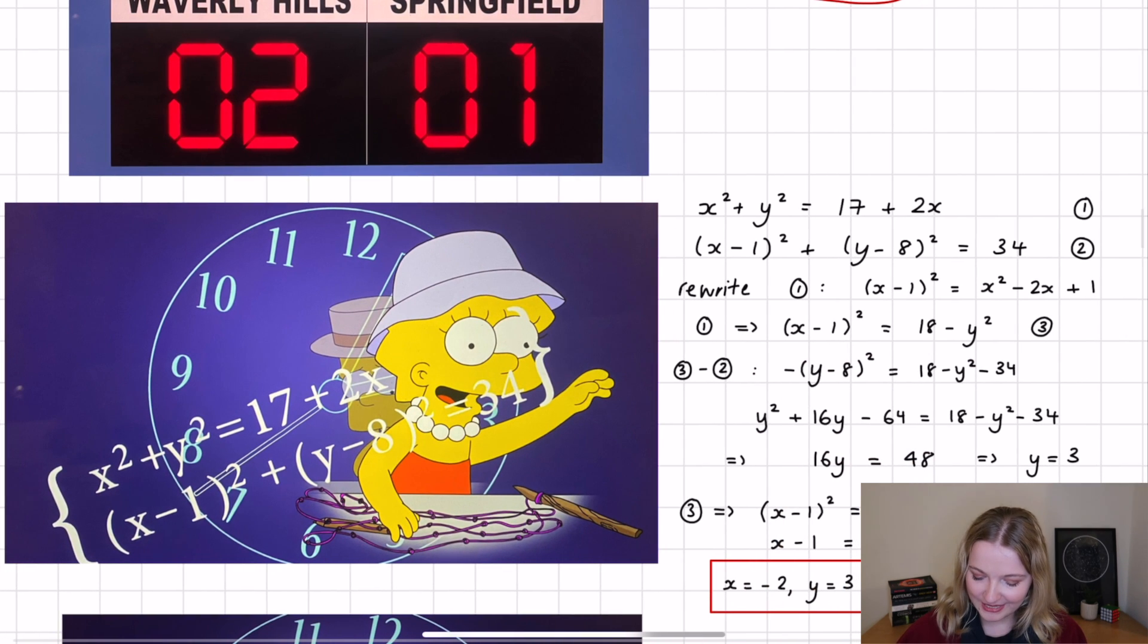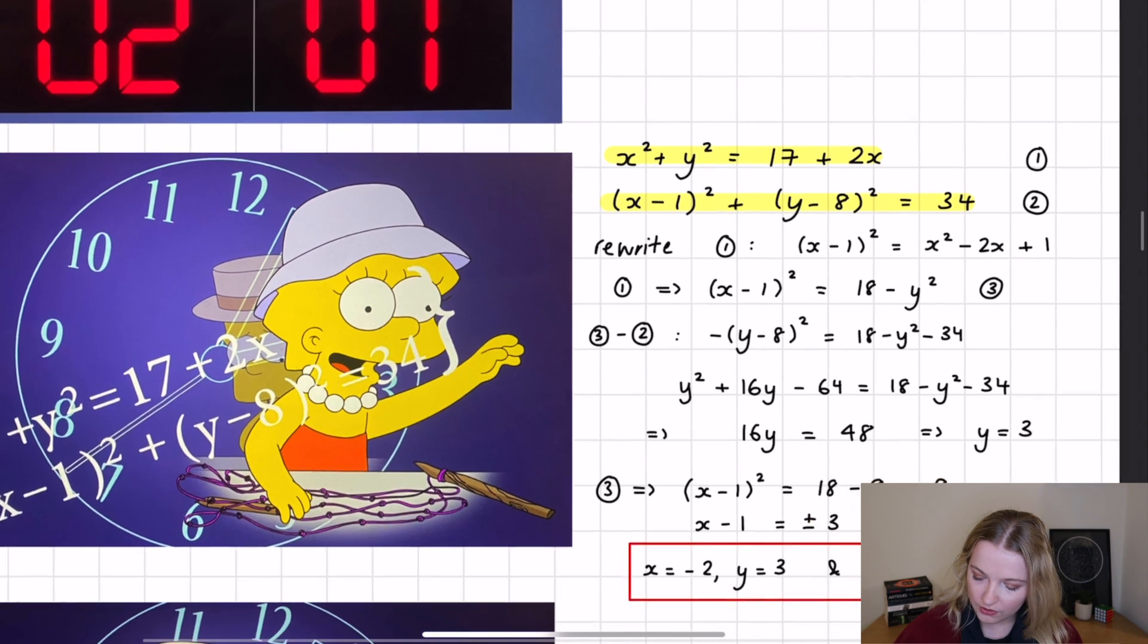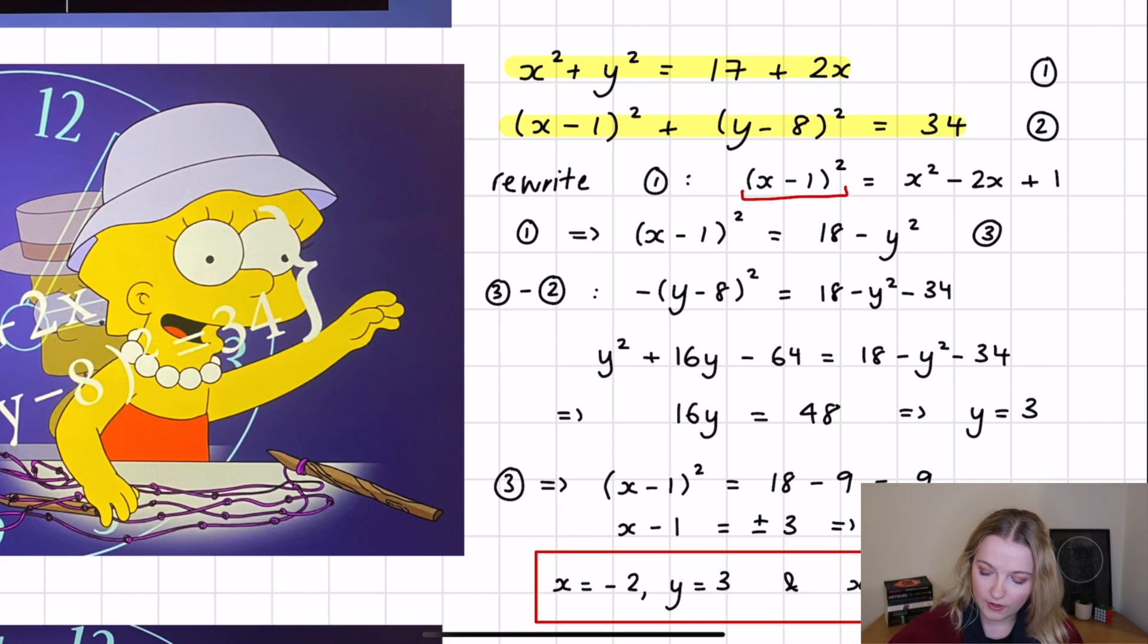The next question was this question here. And I like this because it was simultaneous equations. Again, I'm just going to highlight the steps that I've taken here. But essentially, we had these two simultaneous equations here. So we have this one and this one, which are one and two. And I did a little trick here, which is where you can rewrite equation one and obtain, I'll just zoom in here so we can see a little bit better, where you can obtain X minus one all squared. And the reason I did that is because there's an X minus one all squared in equation two. So then what you obtain is, and I've called it equation three here. So by rewriting one, you can rewrite one in this format here, which is X minus one all squared equals 18 minus Y squared. I've denoted that as equation number three.